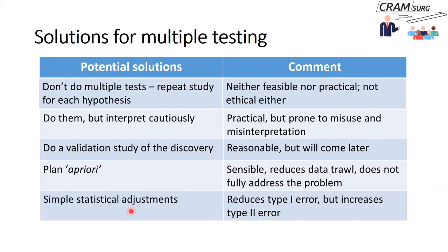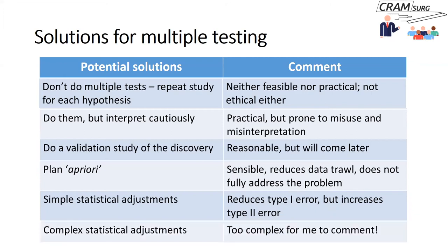You could also do some simple statistical adjustments, like the Bonferroni correction, which we'll discuss in a moment. This kind of adjustment will reduce your type 1 error rate or family-wise error rate. But on the other hand, it will increase your type 2 error — in other words, it'll make the study less powerful, meaning you might ignore some really positive findings. To negate that — to reduce the impact on type 2 error — there are more complex statistical adjustments you can do, but that's beyond the scope here.